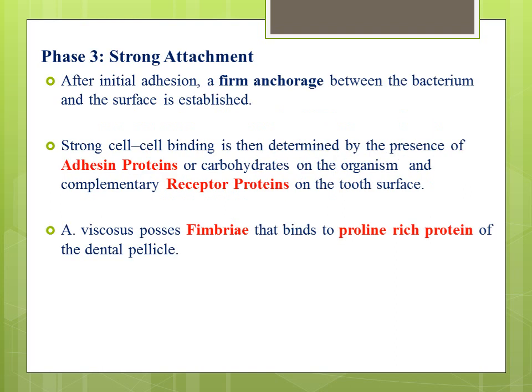Phase three is strong attachment — after initial adhesion, a firm anchorage between the bacteria and the surface is established, along with strong cell-to-cell binding. This is determined by the presence of adhesion proteins or carbohydrates on the organism and complementary receptor proteins on the tooth surface. One classic example is Actinomyces viscosus, which possesses fimbriae containing adhesins that bind to the proline-rich proteins of the dental pellicle. The whole process is very species-specific.